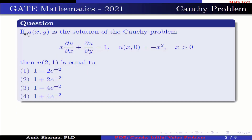The question is: if u is the solution of the Cauchy problem x times ∂u/∂x plus ∂u/∂y equals 1, with u(x, 0) equal to minus x squared, where x is greater than 0, then u equals — option 1: